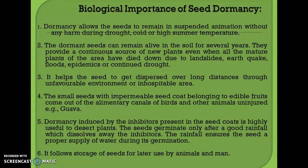In the soil, dormant seeds can act as a seed bank, providing a continuous source of new plants even after all mature plants of an area have died due to landslides, earthquakes, floods, epidemics, or continued drought. Dormancy also helps seeds disperse over long distances through unfavorable or inhospitable areas. Small seeds with impermeable seed coats belonging to edible fruits can pass through the alimentary canal of birds and other animals uninjured. Dormancy induced by inhibitors in desert plants means seeds germinate only after good rainfall, which dissolves the inhibitors and ensures adequate water supply.